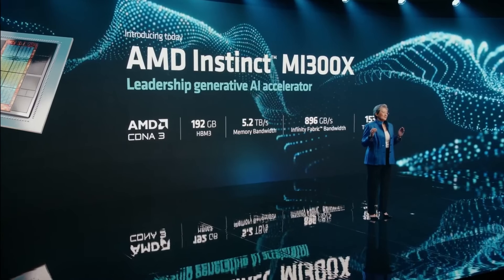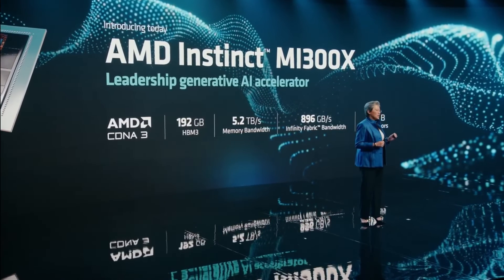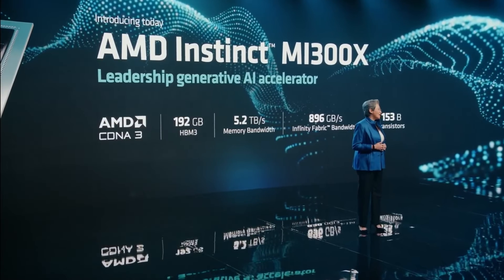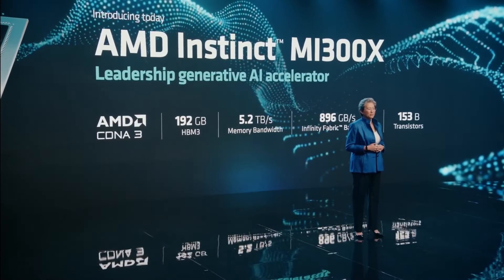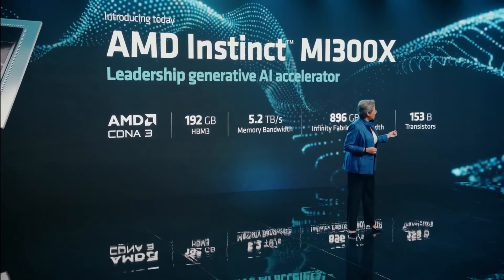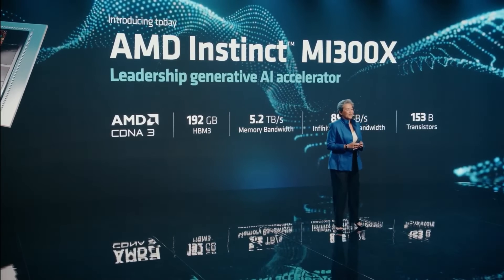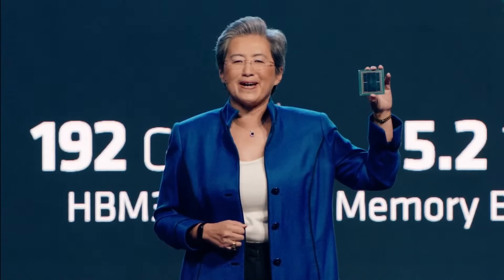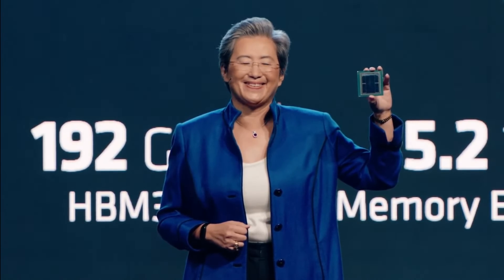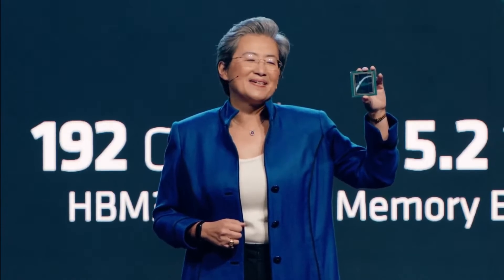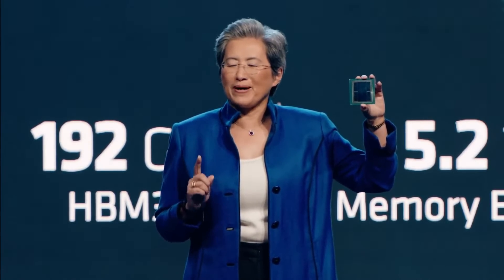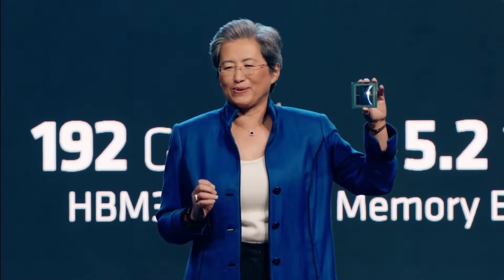Pivoting to the new version announced at the event — this is the MI300X. Remember those three CPU chiplets on the A? Take those out and replace them with two GPU chiplets for the X. So it's purely compute, purely looks like an accelerator. We now have up to 192 gigabytes of HBM3 memory, 5.2 terabytes per second of memory bandwidth, and 153 billion transistors. With all these chiplets and advanced packaging, that's quite a package.